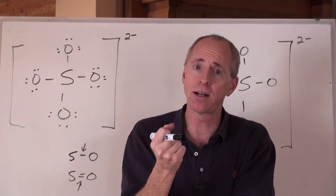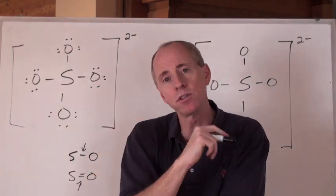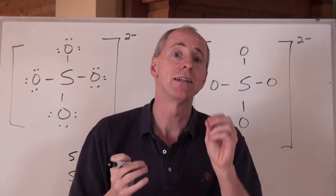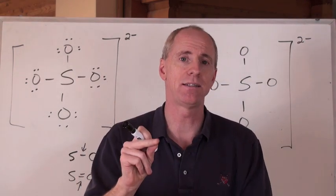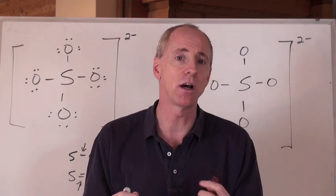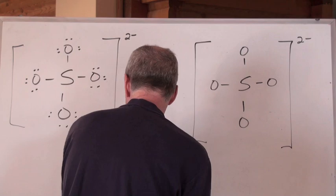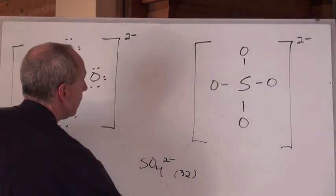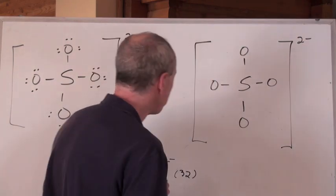Can sulfur exceed the octet rule? Yes it can. Because it's not in period number 2 of the periodic table. And sometimes, when an element can exceed the octet rule, it does exceed the octet rule. And that actually makes a more stable molecule, really. The more bonds that are going to form, the more energy is released, and that's a good thing for stability. So really, what's going to happen here is this.